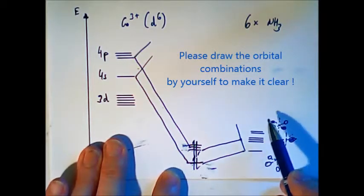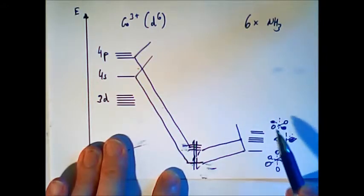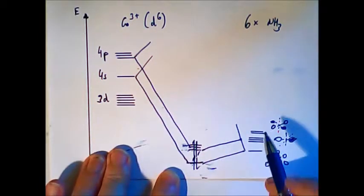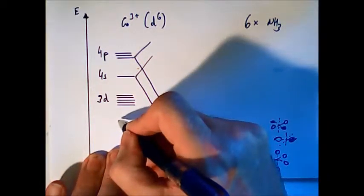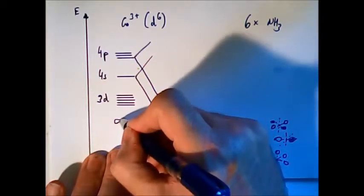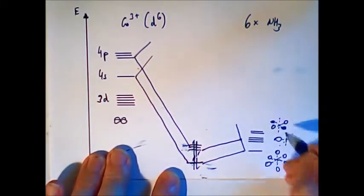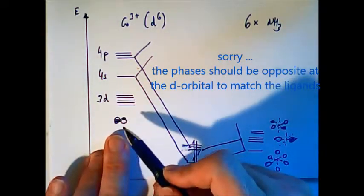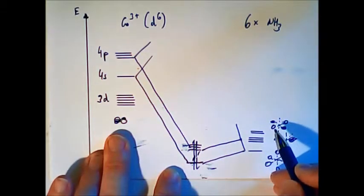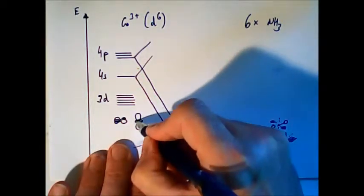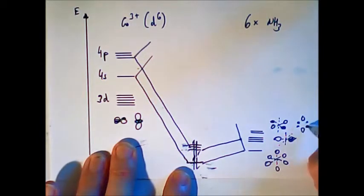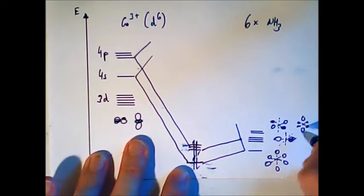Now the last two are most interesting because now I have two nodes. And two nodes in the group orbitals fit with some d orbitals. If you look closely, then this group orbital will fit with the x-square minus y-square orbital. Let me check here. So this orbital has also two node planes. So it will overlap with this one. And the z-square orbital will fit with the other one, which has also two node planes.